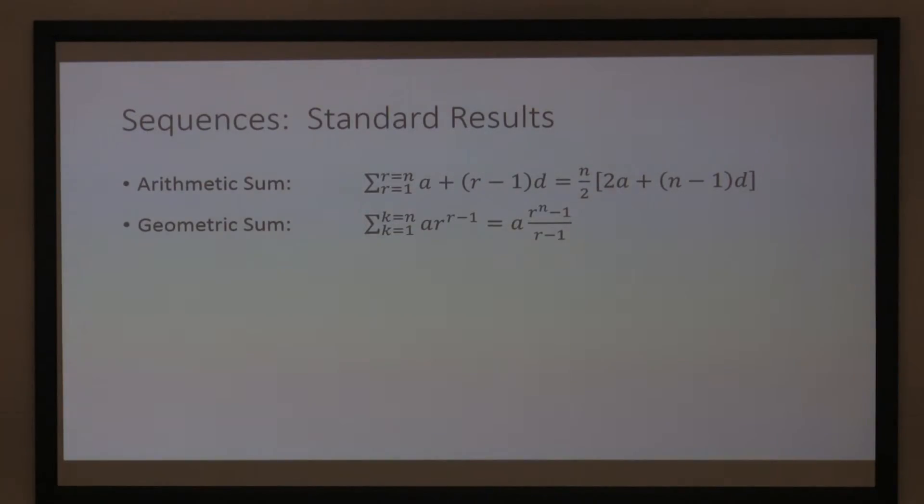Okay? Standard stuff. A geometric sum. That's a number with a constant ratio. The sum of those numbers would be a, the first term, times r to the n minus 1 over r minus 1, where r is the common ratio. And so that would be just standard knowledge.